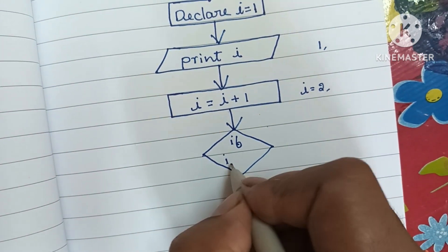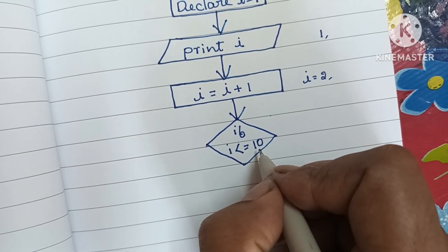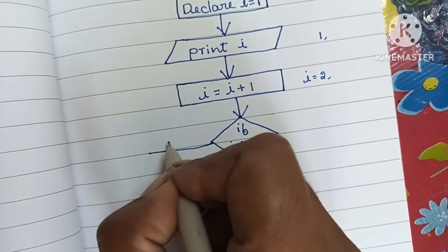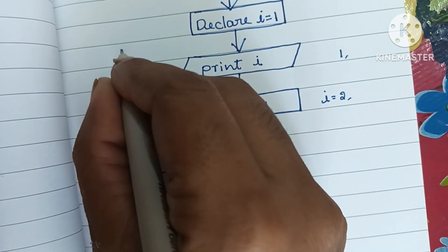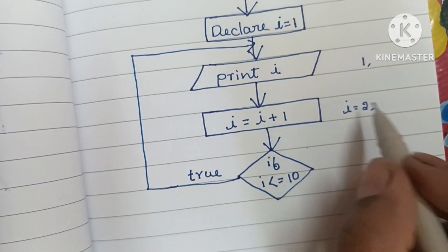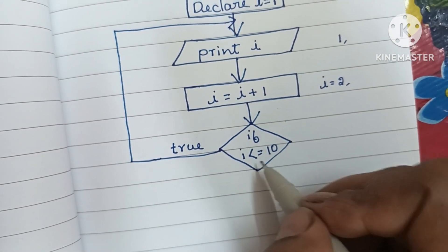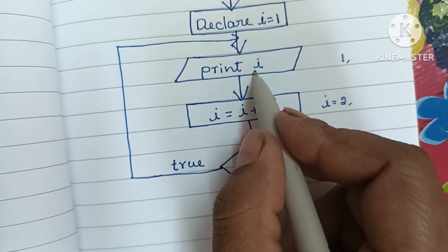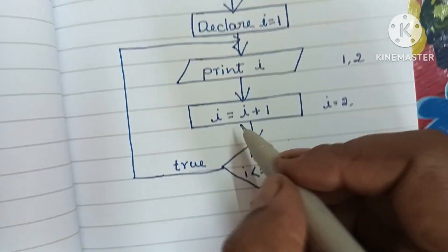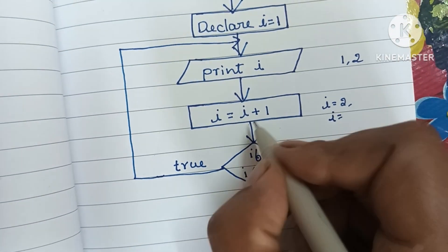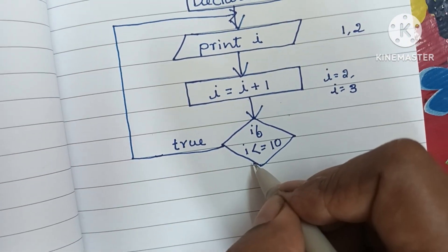Next we have to check if i value is less than or equal to 10. If i value is less than or equal to 10 and it is true, we have to repeat this process. The value of i is 2. Since 2 is less than or equal to 10, it goes back to print the value of i, which is 2. Then it will increase the value of i — 2 plus 1 becomes 3.